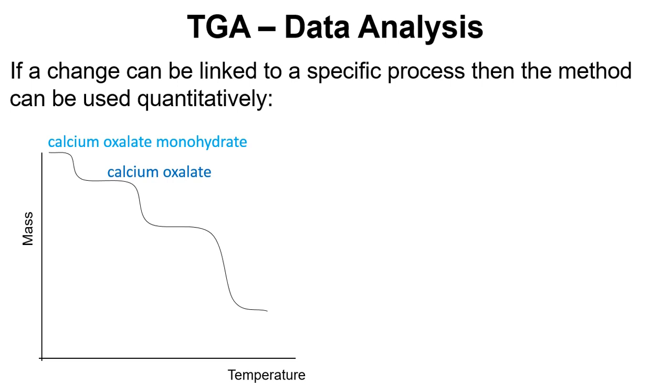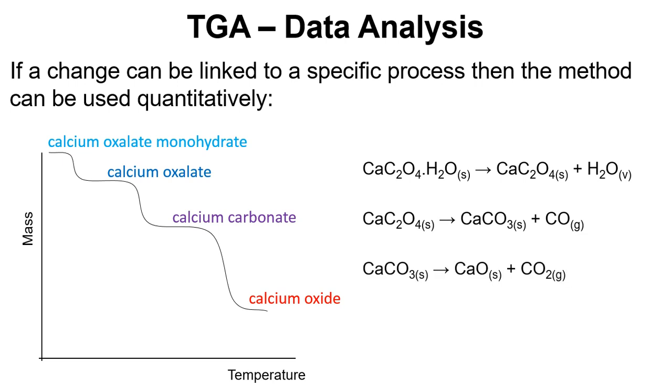That will decompose first of all by losing the water, and then the oxalate will turn into a carbonate and then we'll get calcium oxide at the end. We can link this to very definite decomposition processes and that can be very useful in the analysis that we're doing.